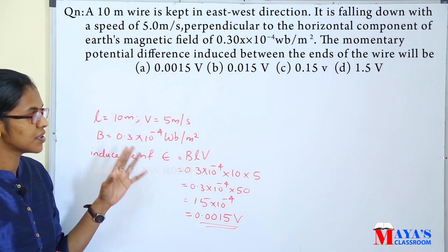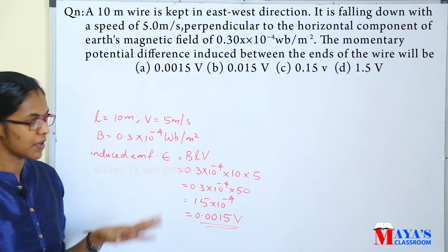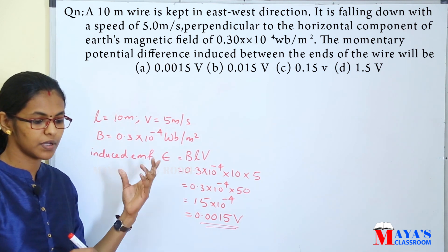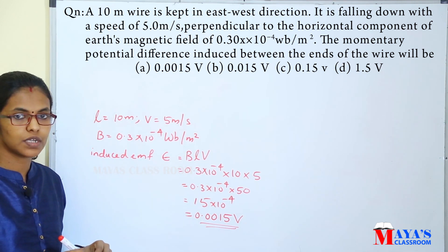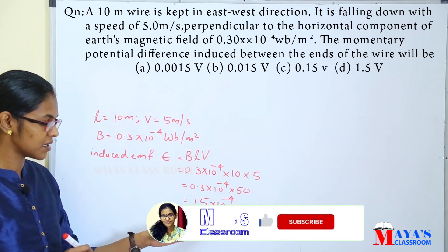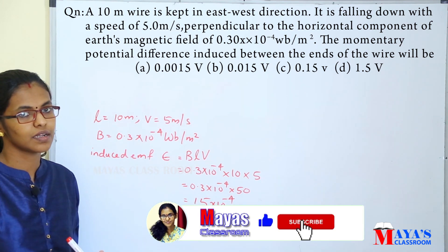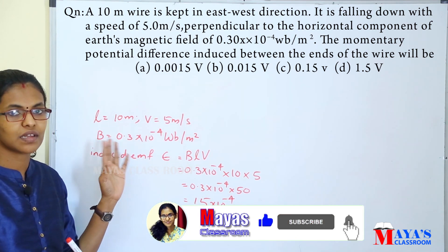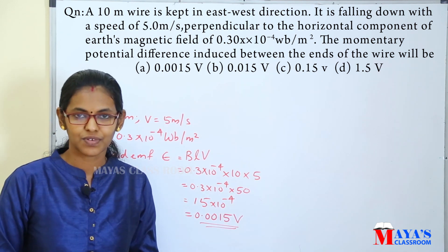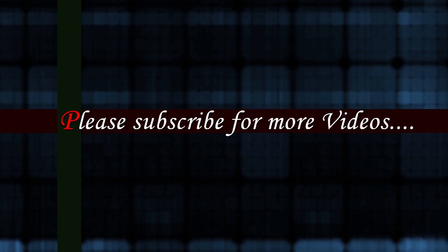Looking at the options — 0.0015 volt, 0.015 volt, 0.5 volt — the answer is 0.0015 volt.